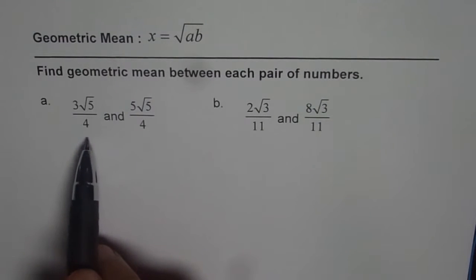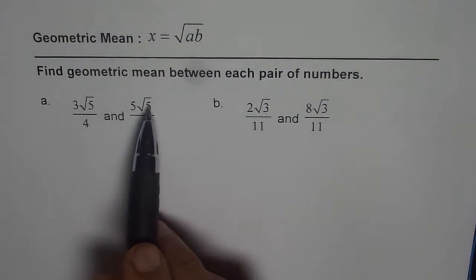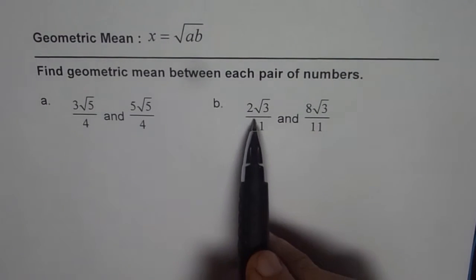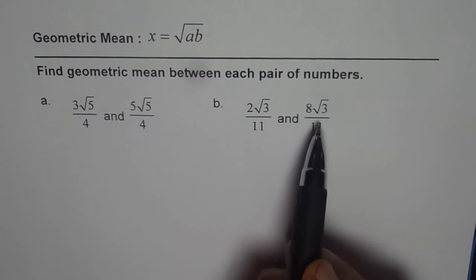Part A is 3 square root 5 over 4 and 5 square root 5 over 4. Part B is 2 square root 3 over 11 and 8 square root 3 over 11.